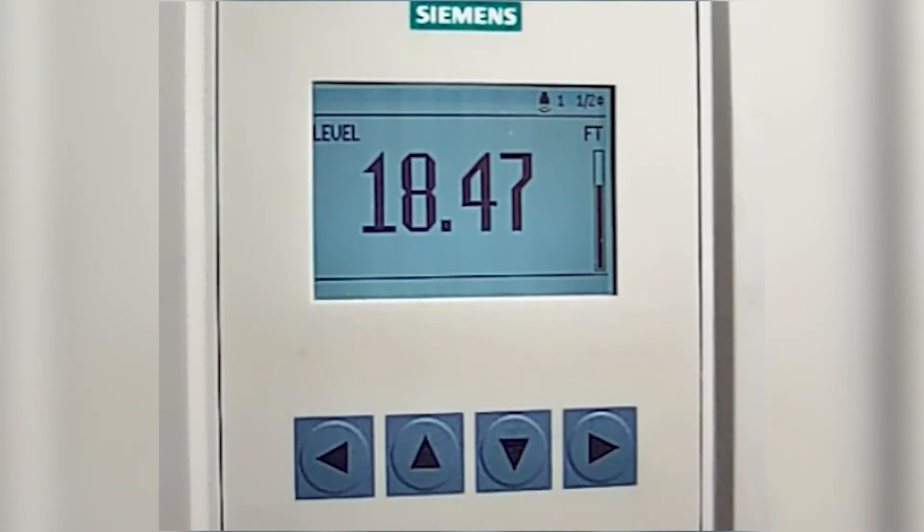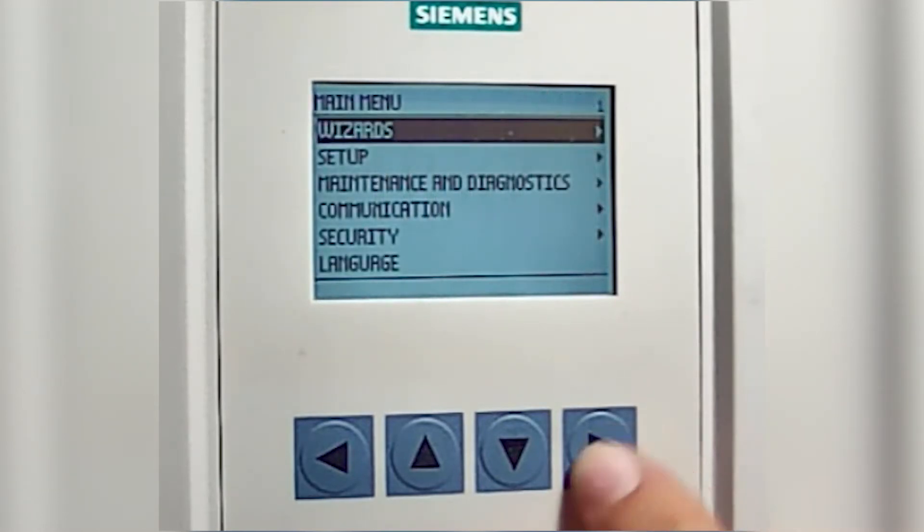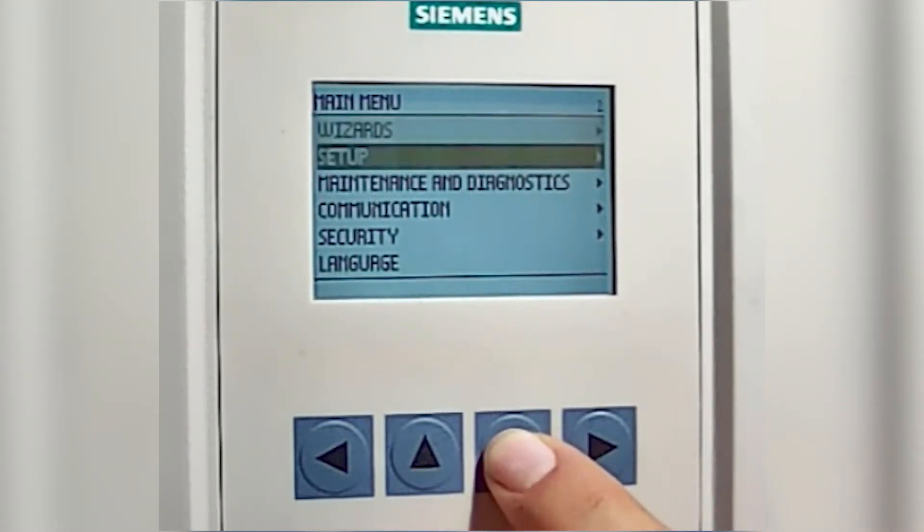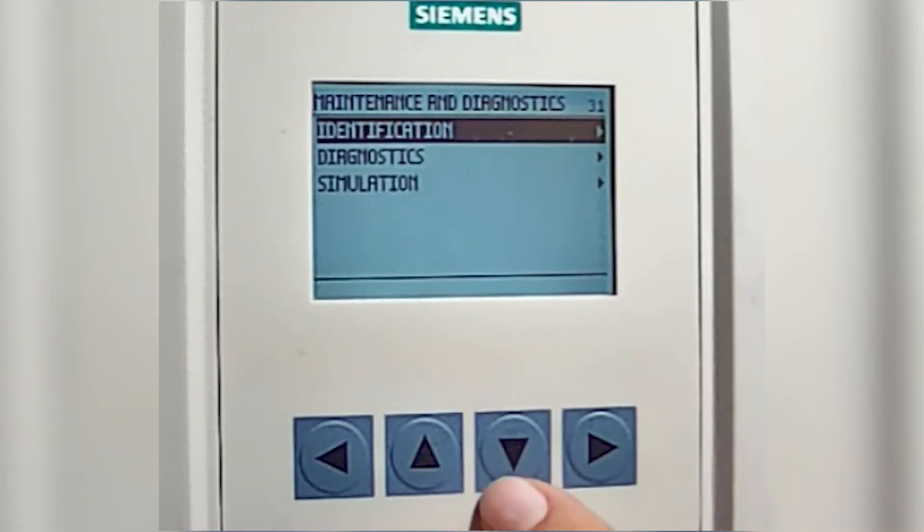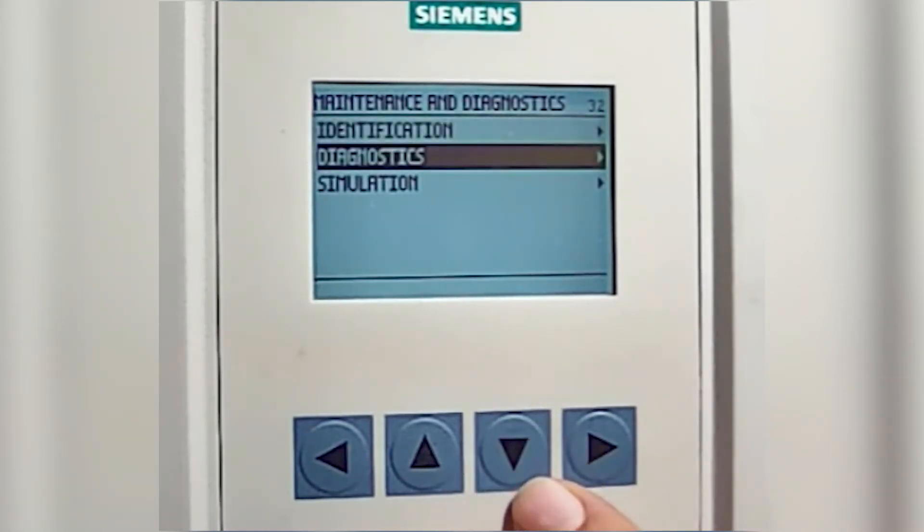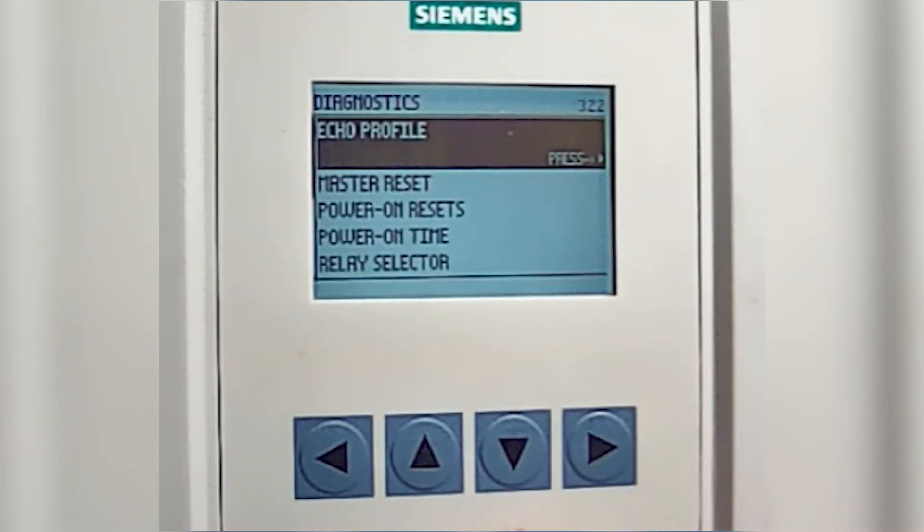First thing we'll do is right arrow to get into the menu, arrow down to Maintenance and Diagnostics, right arrow into the menu, arrow down to Diagnostics, right arrow to accept it, right arrow again for Echo Profile.